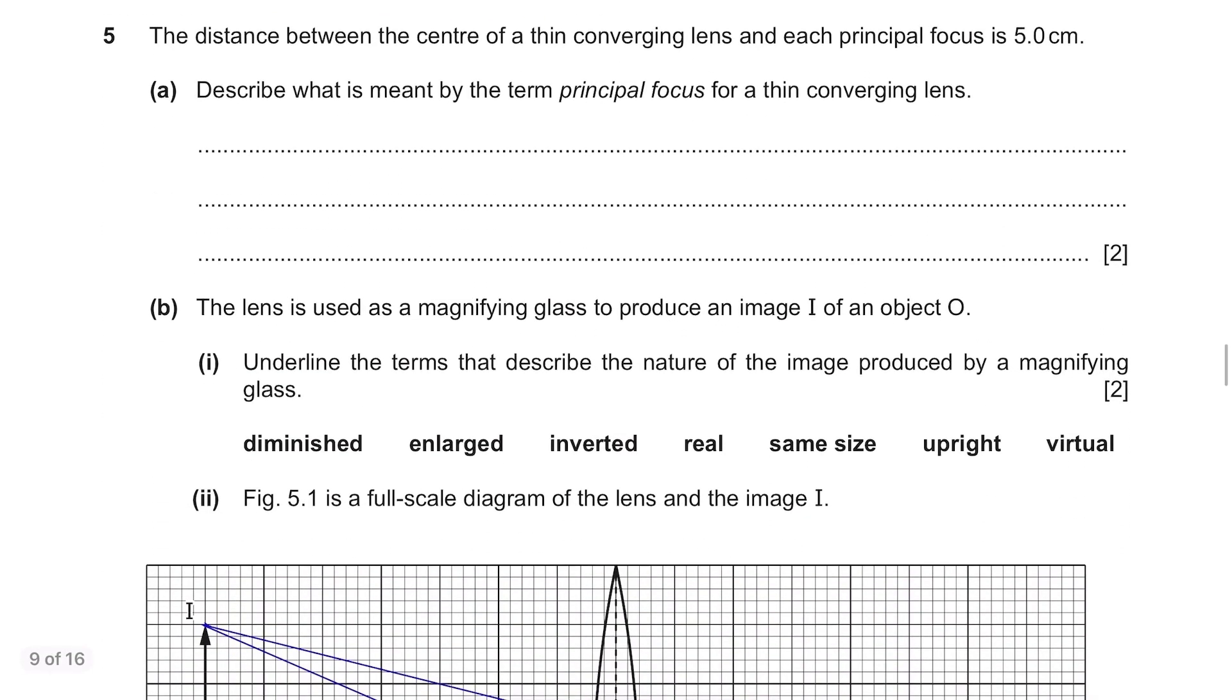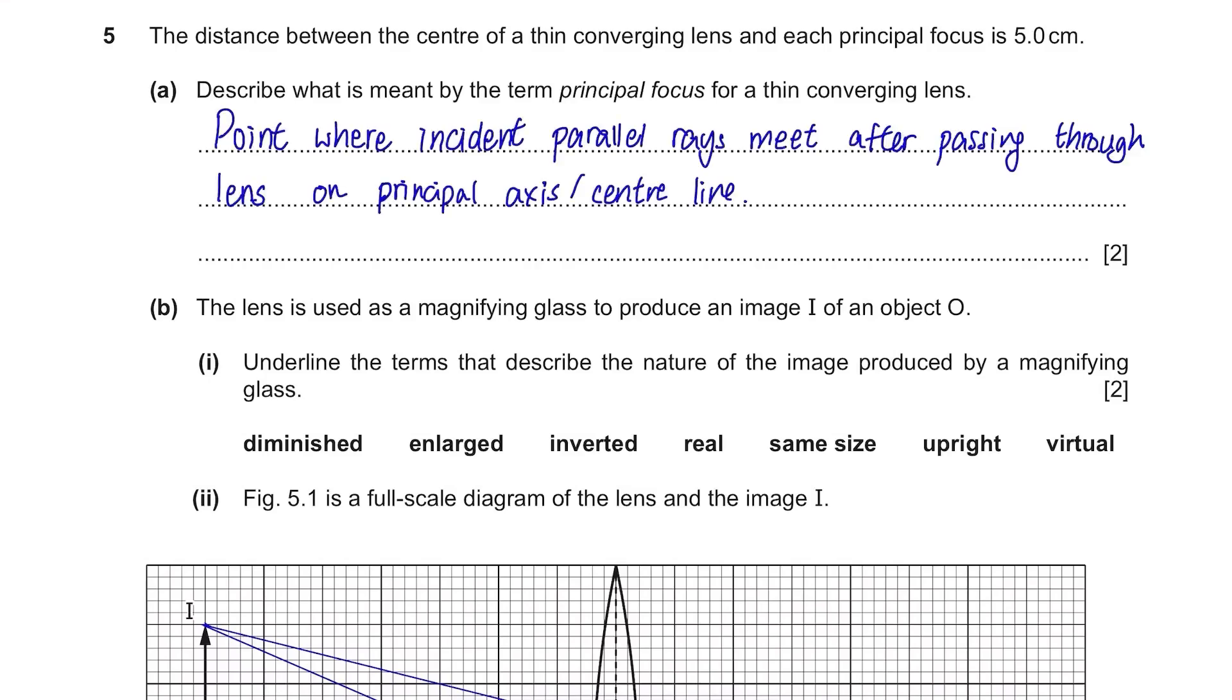Question 5. The distance between the centre of a thin converging lens and each principal focus is 5 cm. Part A. Describe what is meant by the term principal focus for a thin converging lens. Another definition, sadly you do have to memorize lots of definitions for science subjects. It's the point where incident parallel rays meet after passing through lens on principal axis or centreline.